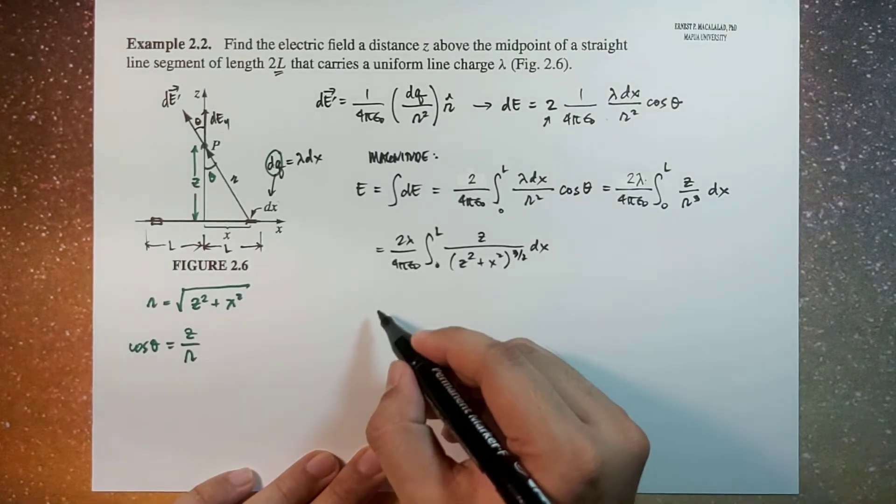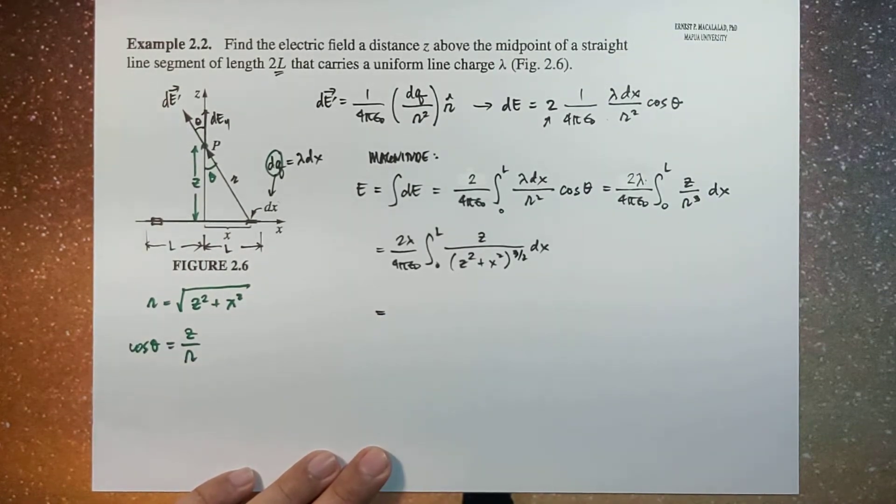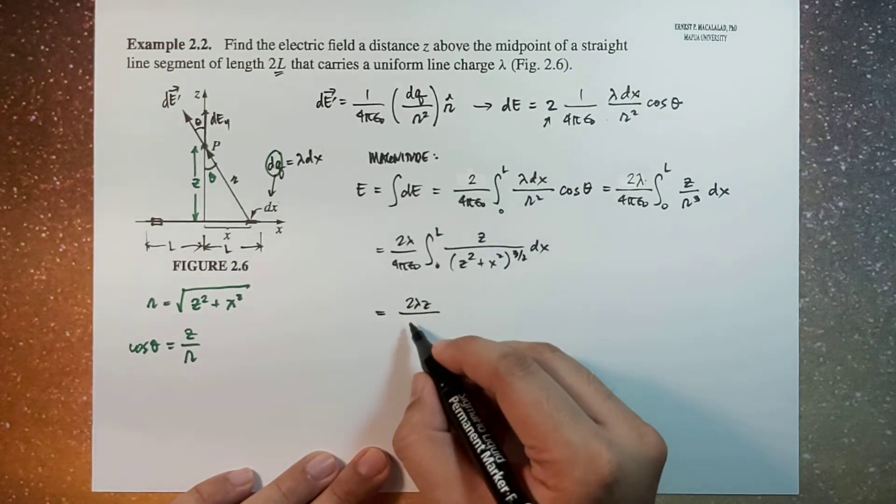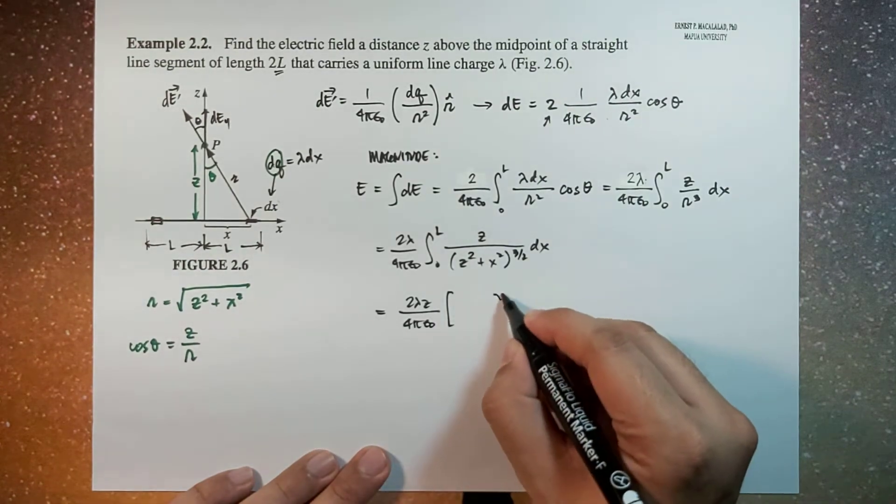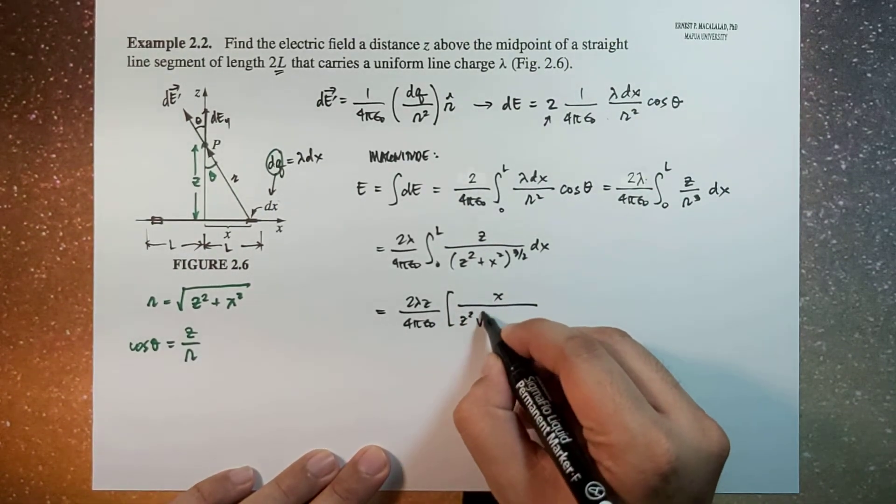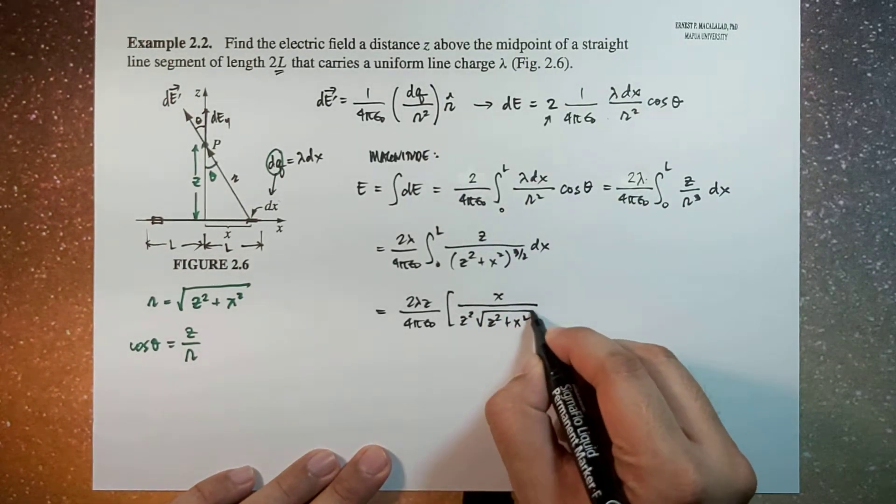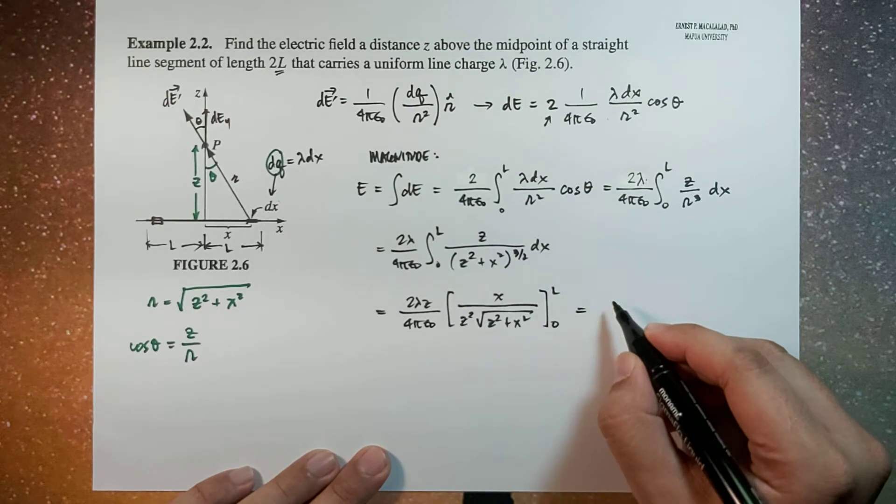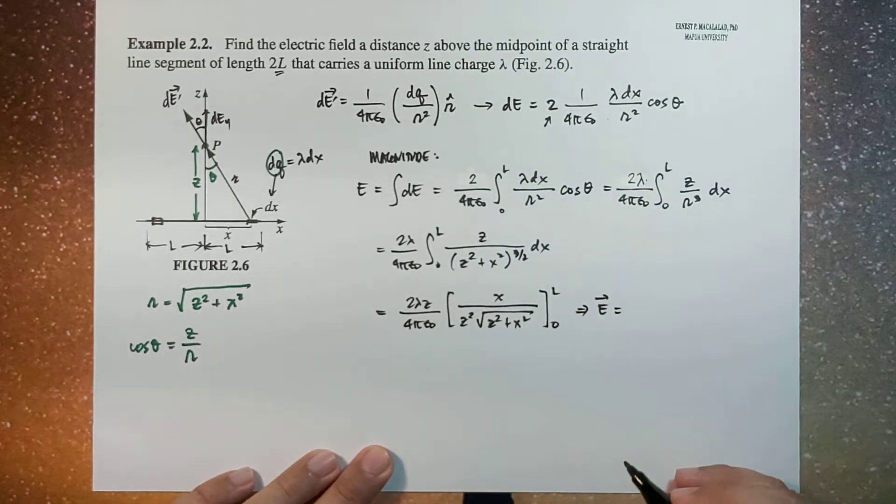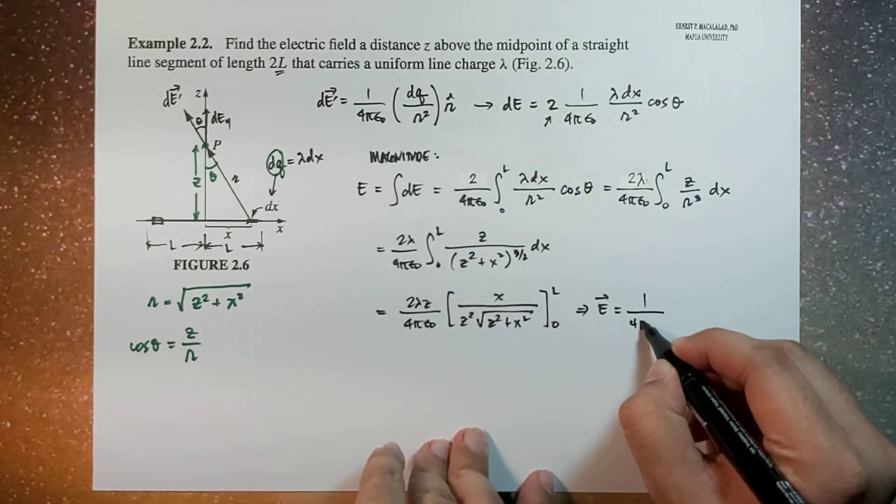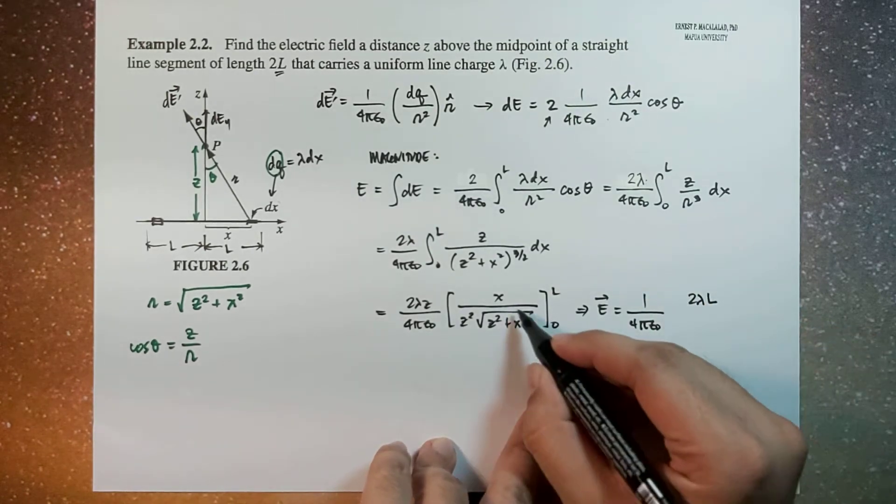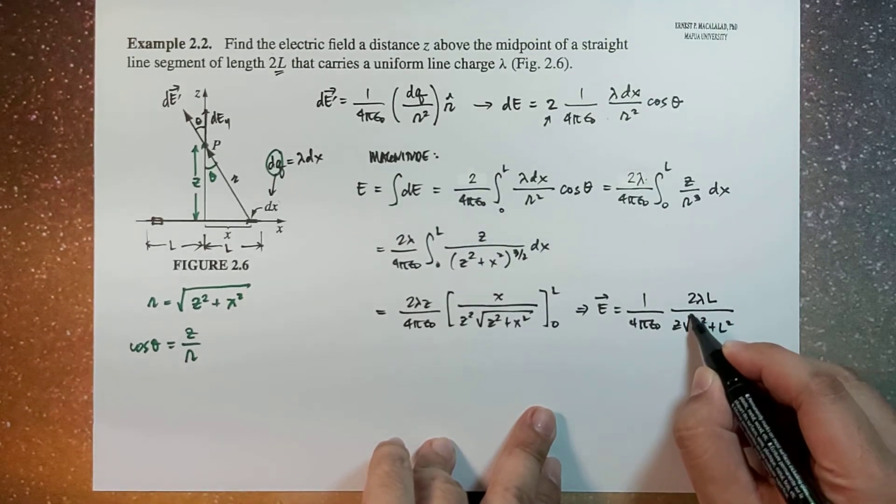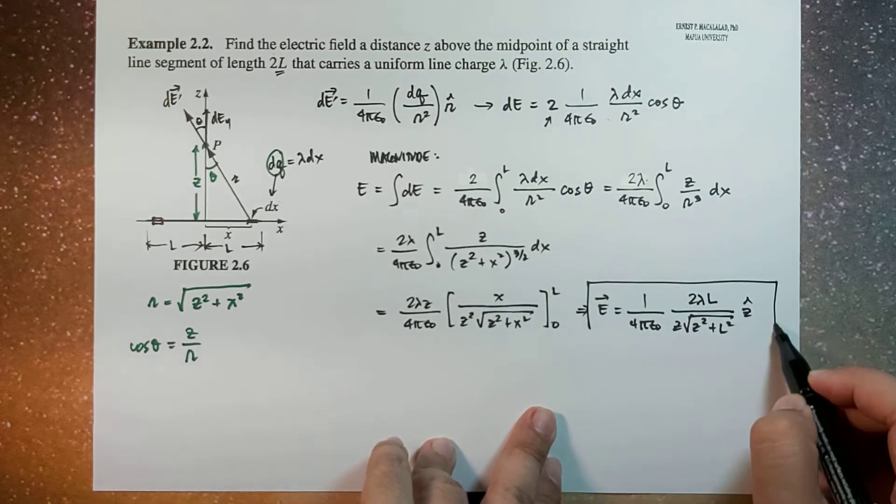And then we solve this integral, you can do it by yourself, you are already expert in taking the integral. Therefore, the result would be 2 lambda z over 4 pi epsilon times x divided by z squared times square root of z squared plus x squared. Then we evaluate it from 0 to L. And the end result is 1 over 4 pi epsilon naught times 2 lambda L divided by z times square root of z squared plus L squared z hat. This is the net electric field.